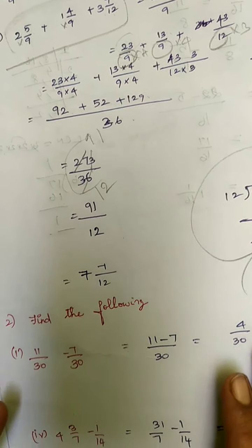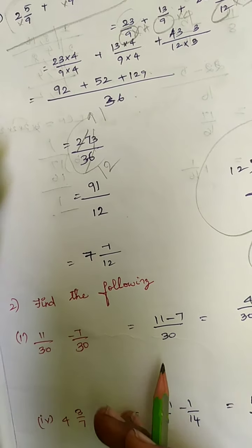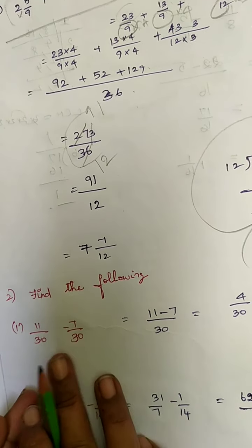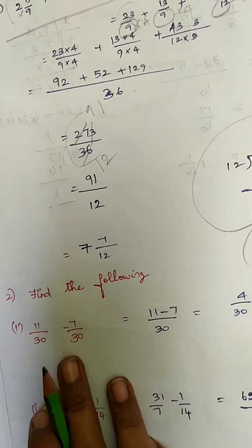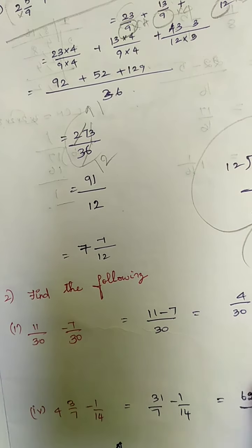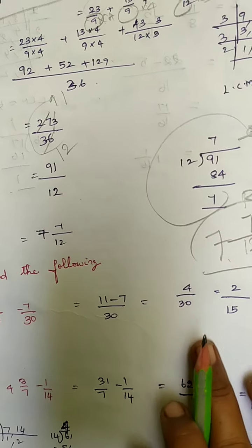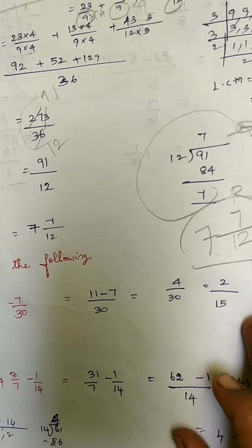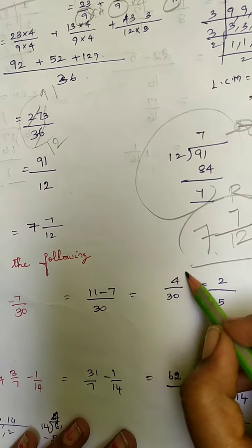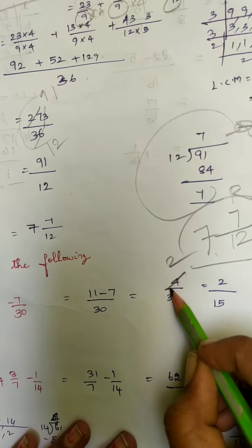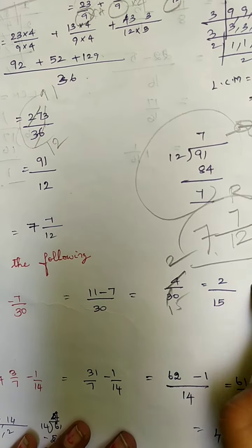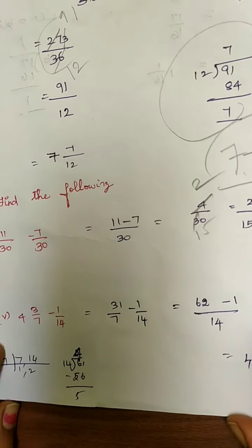Second: find the following — same denominator. So you can subtract the numerators: 11 minus 7 is 4 by 30. You can cancel the common term: 2 twos are 4, 1 two is 2, 5 twos are 10, so your answer is 2 by 15.